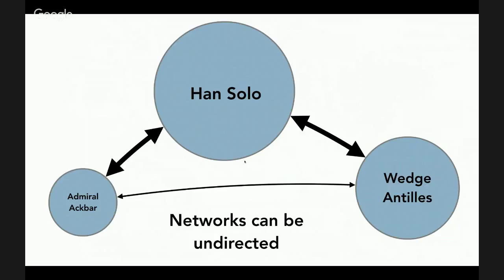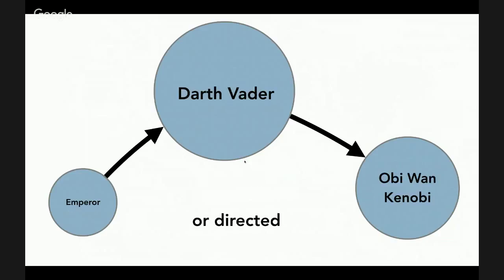Just as edges can be directed or undirected, we can have an entire network of all undirected relationships, a network where all edges are directed, or networks with mixed edges where some are undirected and some are directed.